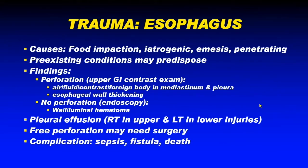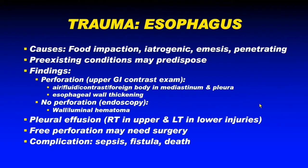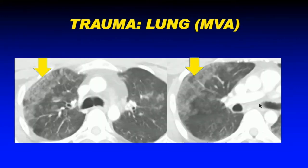When esophageal injury is clinically suspected, we start with CT. Most of the time CT doesn't show any defect, except for pneumomediastinum and pleural effusions, so we then perform an upper GI swallow. If that shows perforation, we stop; if it doesn't, the patient undergoes endoscopic evaluation looking for a small defect. Complications to worry about include sepsis, fistula, and death.